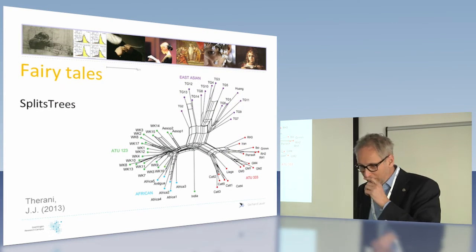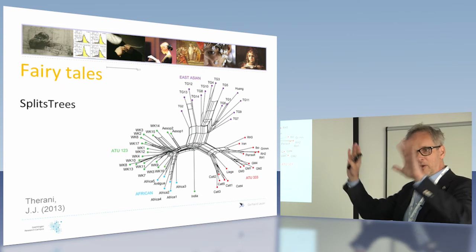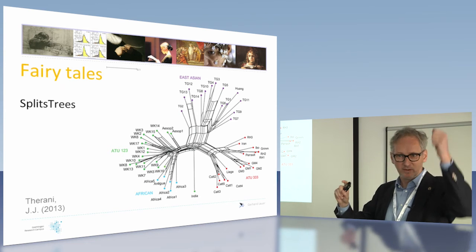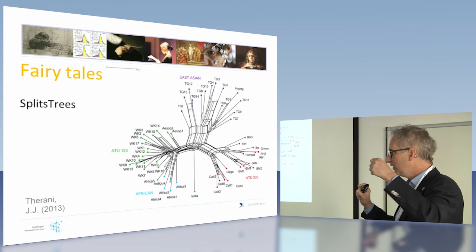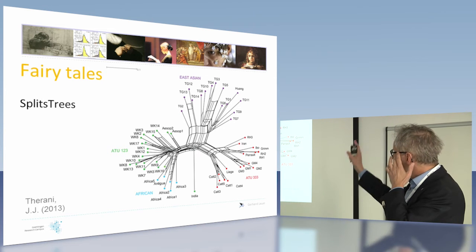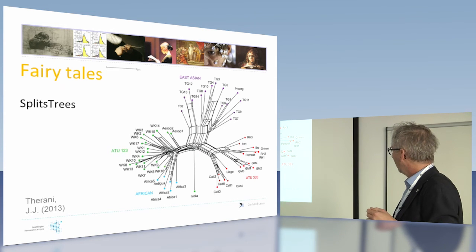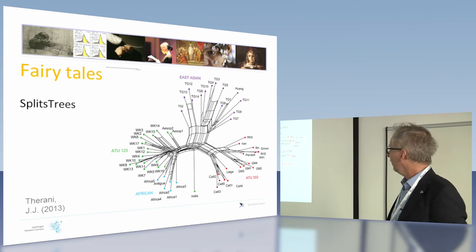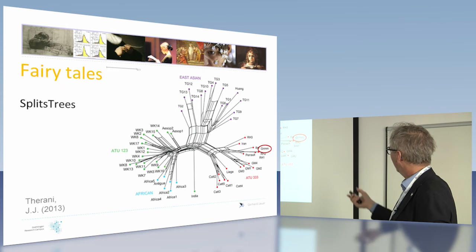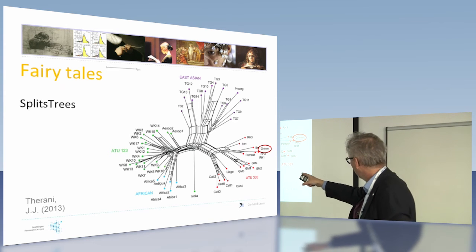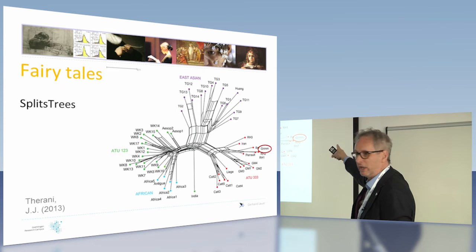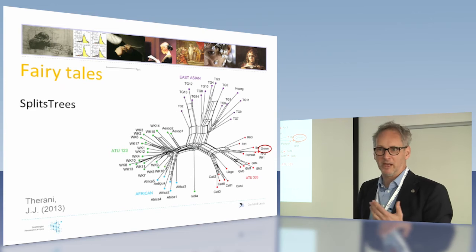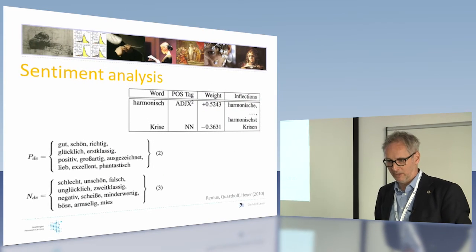My friend Jamie Tirani from Durham tried to get a map of all fairy tales according to the formalism of the Aarne-Thompson index — the classification of all fairy tales — and tried to find out how they group together. Here's Little Red Riding Hood, and you can find clearly cultural groups like East Asian, African types, and Perrault and Grimm are very close together in the European tradition. It's all adopted from biology now — splits trees is a technique from biology.